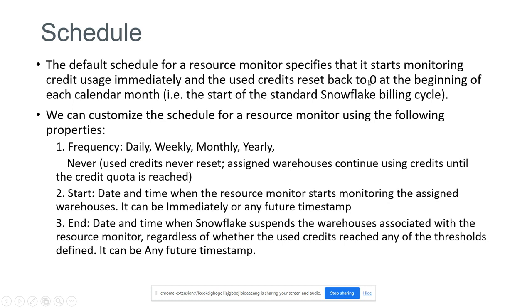The third property is schedule. The default schedule specifies that monitoring starts immediately and used credits reset back to zero at the beginning of each calendar month — the start of the standard Snowflake billing cycle. If we don't specify any schedule, it starts immediately and resets on the first of every month. If we want to customize the schedule, we can use the frequency, start, and end properties.